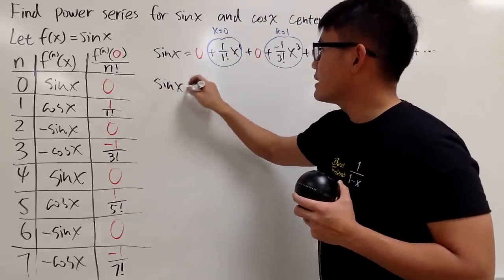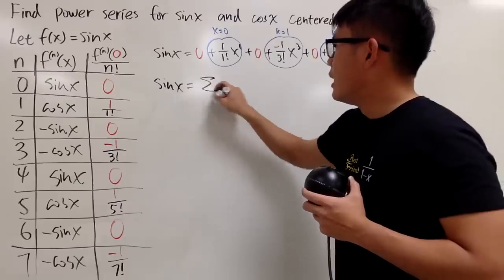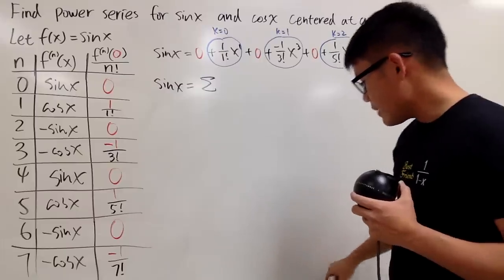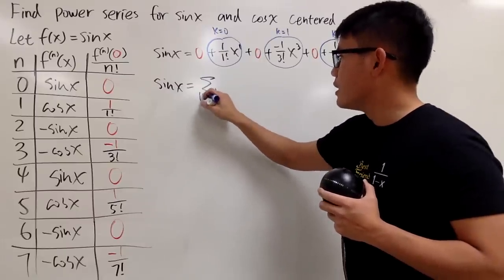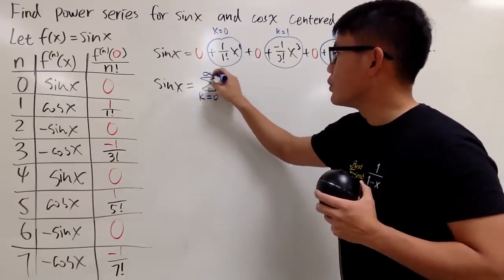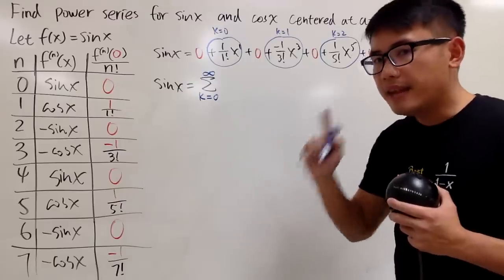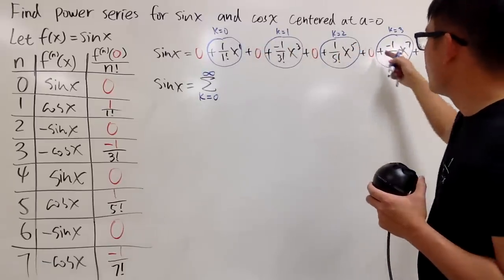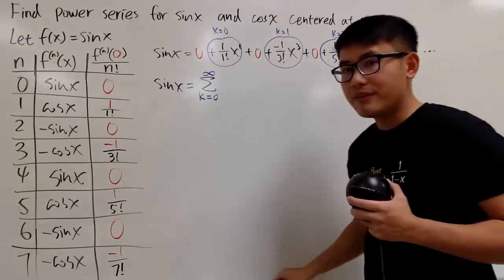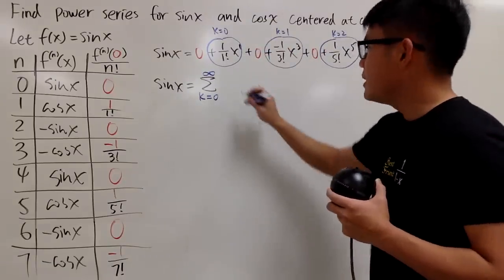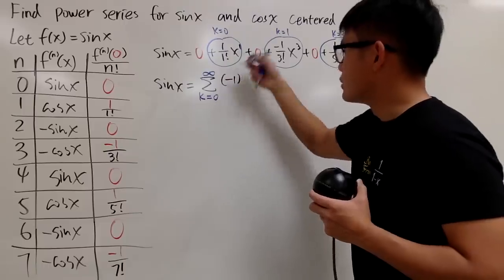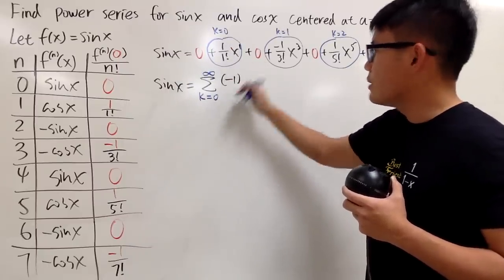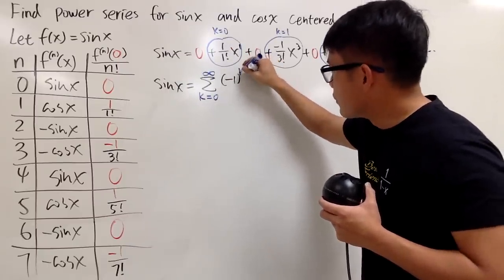Now, I can write this down for you guys. We know sin x is equal to... I will just put this down in the series form right here. I will write down k goes from 0 to infinity. On the top we have 1, negative 1, 1, negative 1, and so on. So, we need to have that alternating factor, namely, negative 1 to some power.